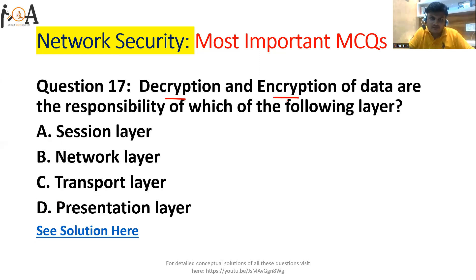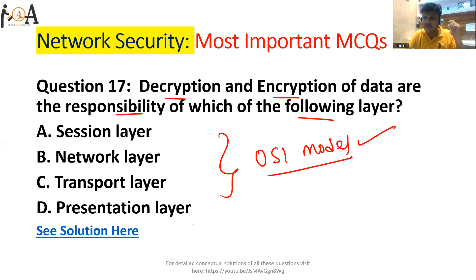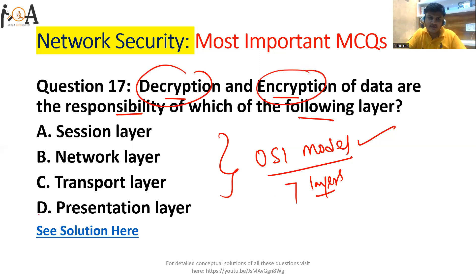Question 17: Decryption and encryption of data are the responsibility of which OSI layer — session, network, transport, or presentation? The OSI model has seven layers, each with specific functionality, protocols, and devices. Out of these seven layers, decryption and encryption of data are the responsibility of the presentation layer. This is covered in detail in our computer network lecture playlist.